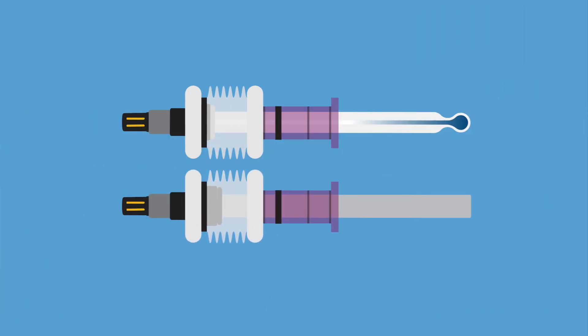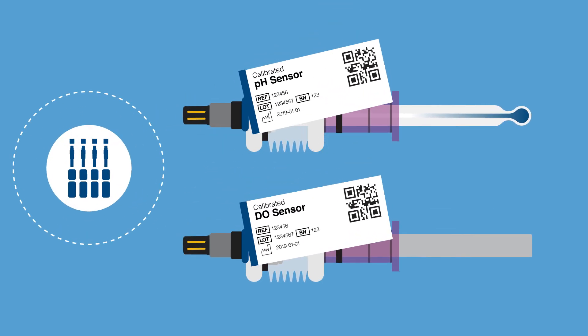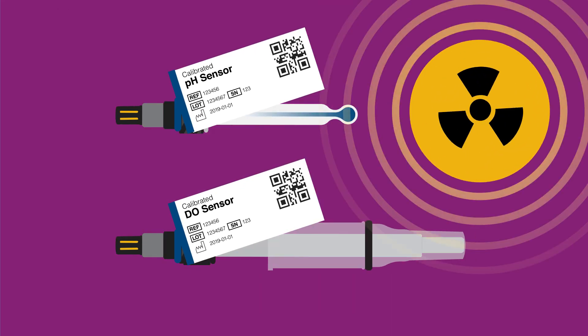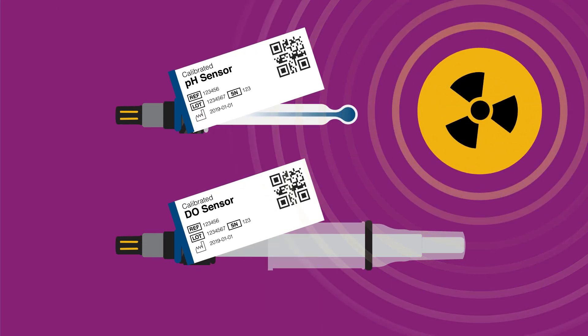Ideally, process sensors should be specifically designed for single-use environments. This would mean sensors that are pre-calibrated, pre-installed without insertion devices, and pre-sterilized by gamma radiation.